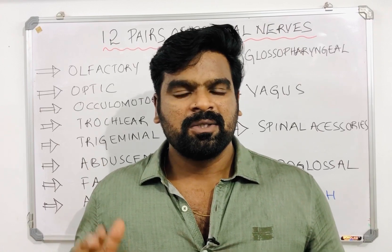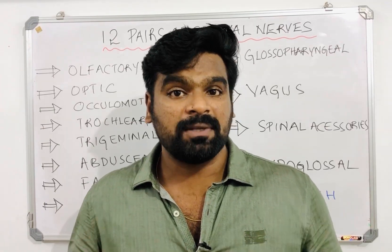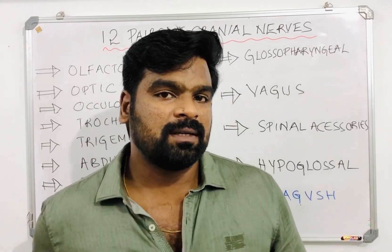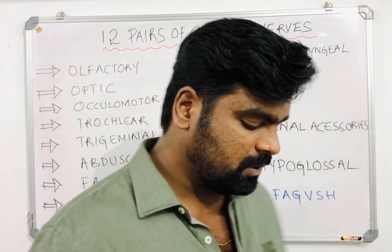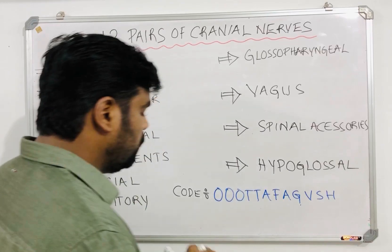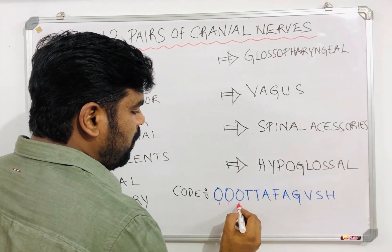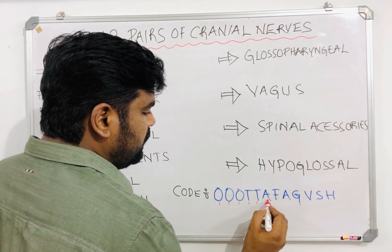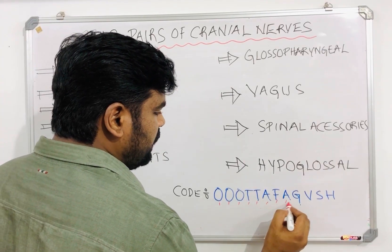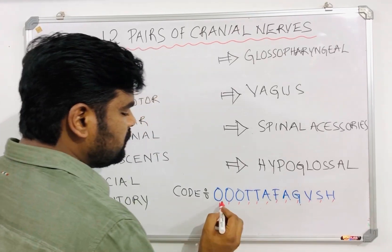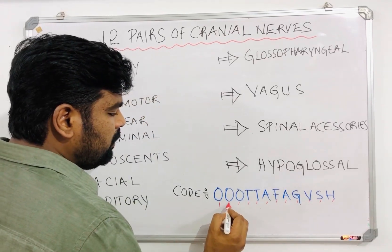To remember these 12 pairs of cranial nerves, you can use the mnemonic chord: OOTAFAGVSH — that means olfactory, optic, oculomotor...